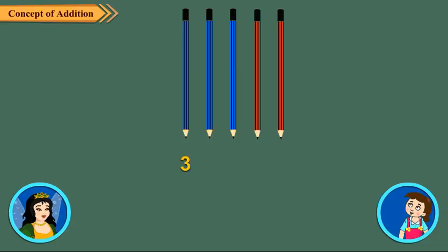That is, three plus two is equal to five. The sign of addition is plus. And five is called the sum. Three plus two is equal to five is an addition sentence and is read as three plus two is equal to five.